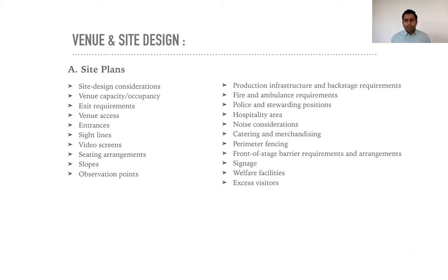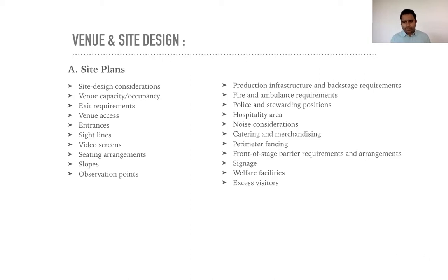Observation points are positions where crew or security members can stand to get a bird's-eye view of the venue and keep everything under control. Production infrastructure and backstage requirements also need enough space — there are a lot of cables, tech riders from artists, waiting areas for performers between sets. It must be well-lit with good air circulation. Fire and ambulance requirements: for any event, ensure there is always a fire tender and an ambulance on standby at the venue.